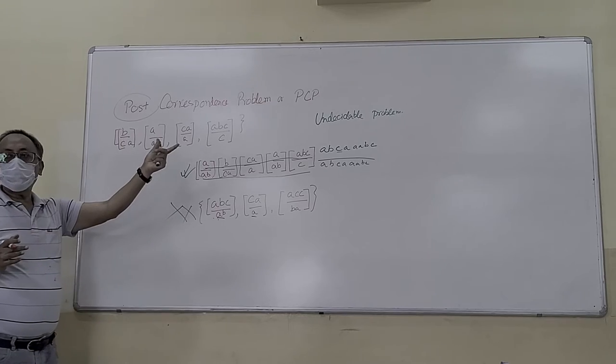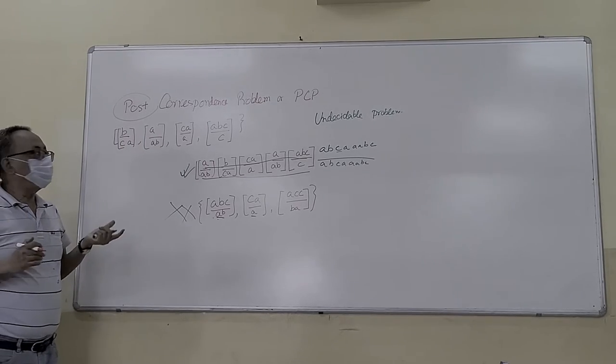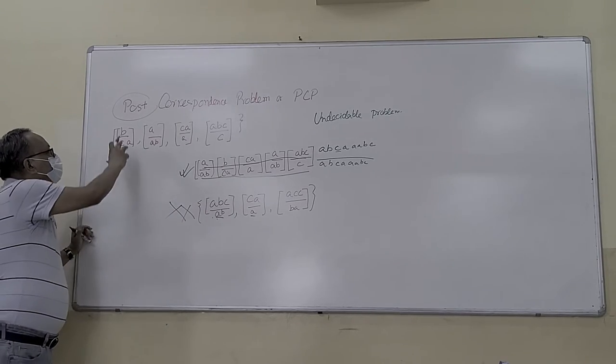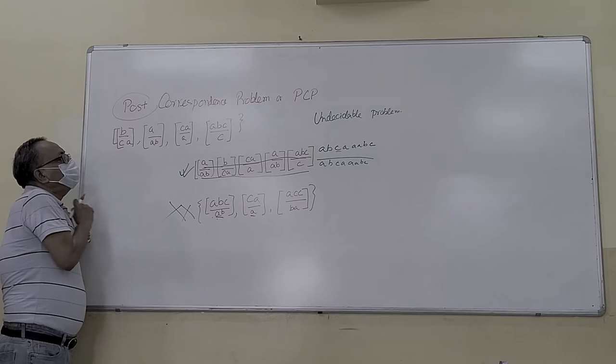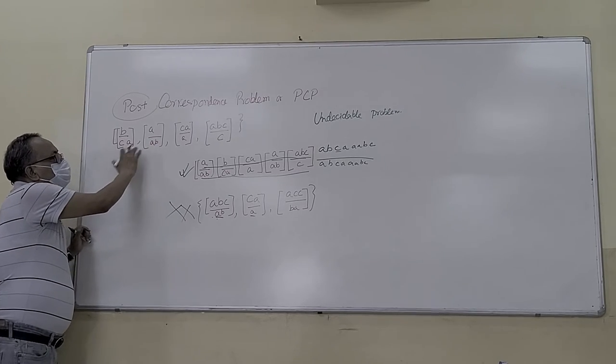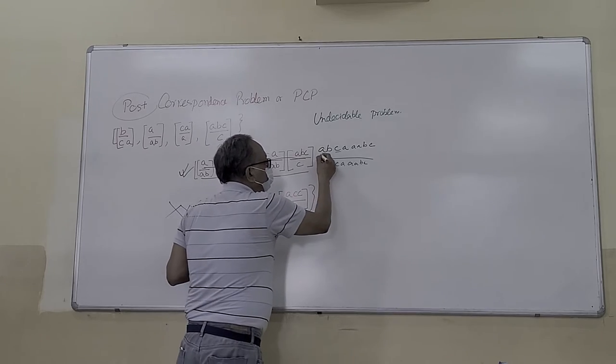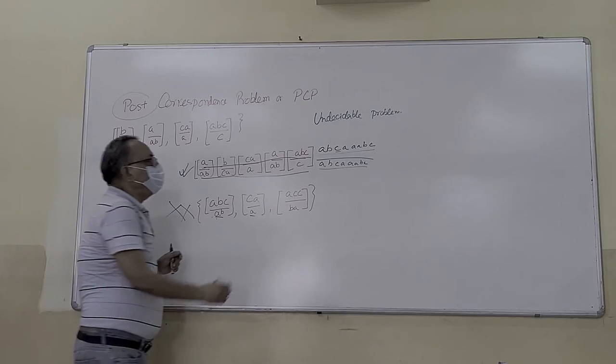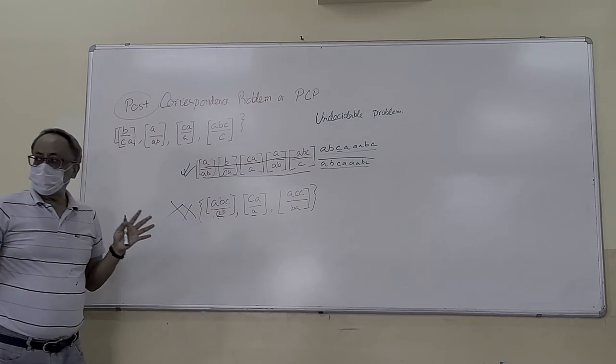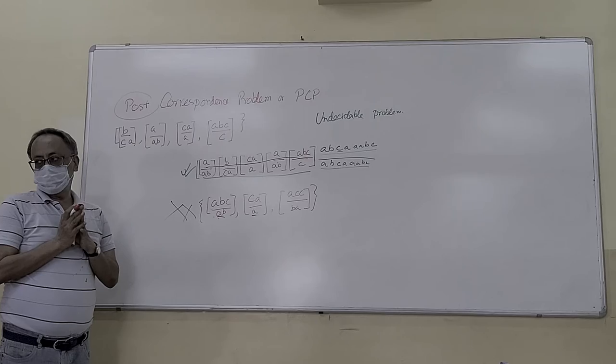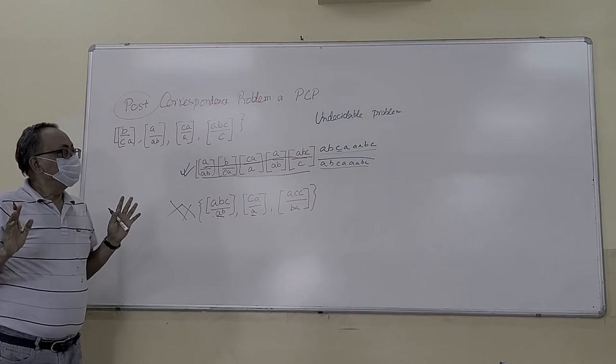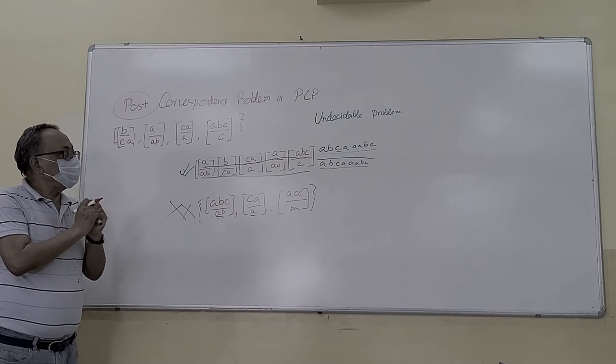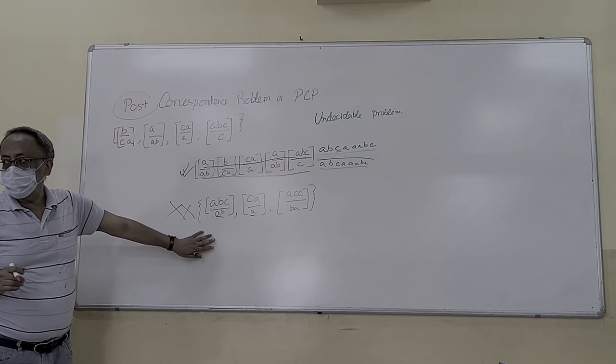Post-Correspondence Problem is another undecidable problem that is in the syllabus. You have any number of dices and you have to collect any number of them so that the strings upper and lower should be the same. For every type of dice you have to start afresh. No algorithm means you have to repeatedly check. This is an undecidable problem that cannot be solved by definition.